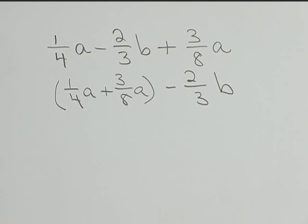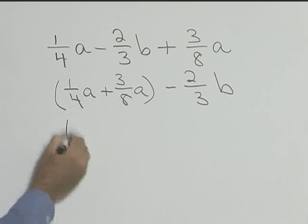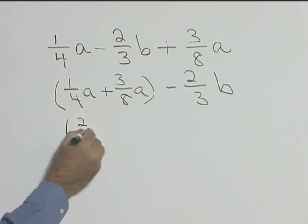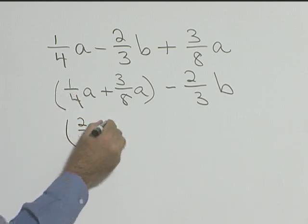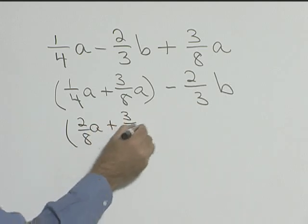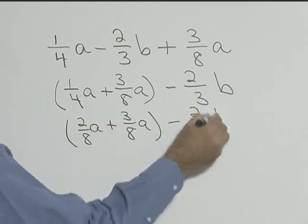Now we want to combine these two. So we need to find a common denominator of 4 and 8. So we can rewrite 1 fourth as 2 eighths A plus 3 eighths A minus 2 thirds B.